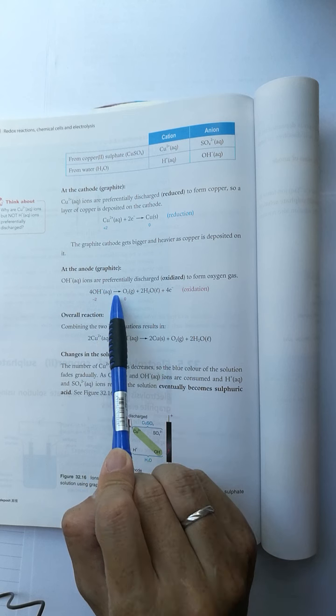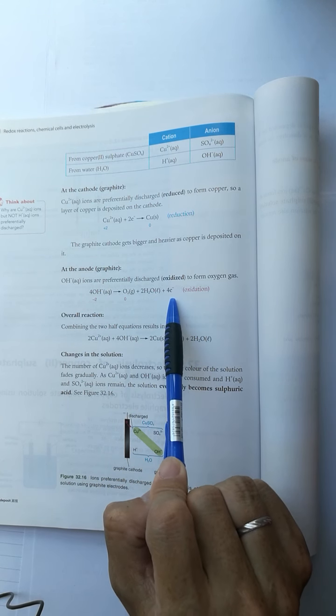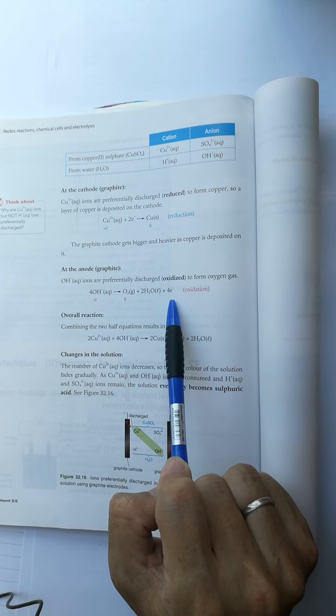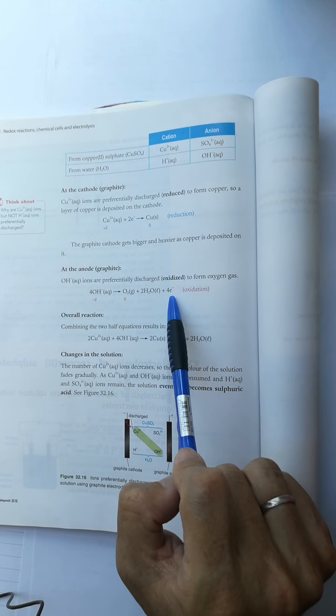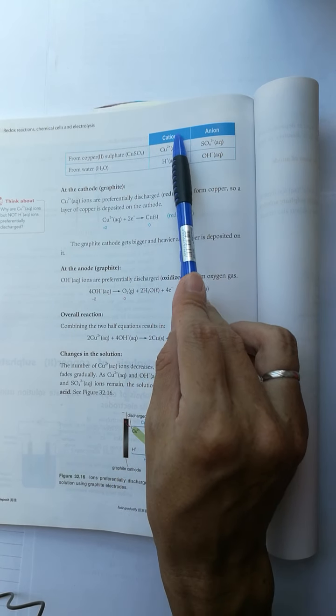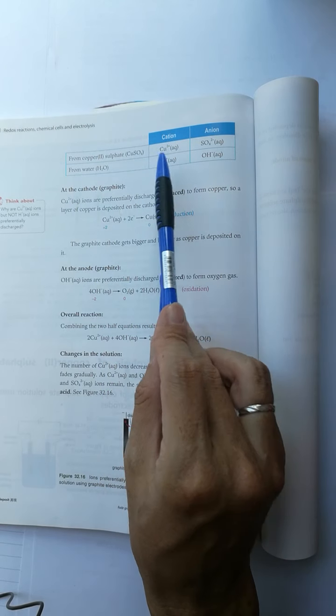Four hydroxide ions form oxygen and two water molecules, releasing four electrons. Then consider the cations—they go to the negative electrode.